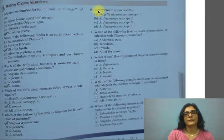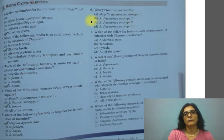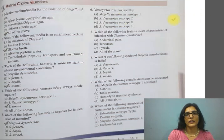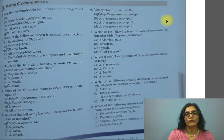Question 6: Vero cytotoxin is produced by which serotype? A) Shigella dysenteriae serotype 1, B) Shigella dysenteriae serotype 2, C) Shigella dysenteriae serotype 8, D) Shigella dysenteriae serotype 10. The correct answer is A, Shigella dysenteriae serotype 1.